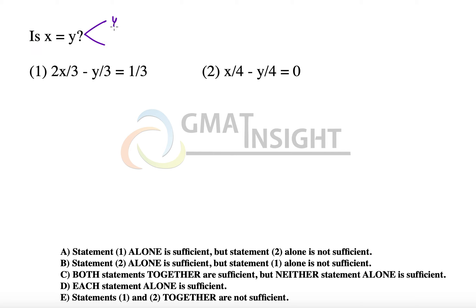Is x equal to y? We need to answer this question in the form of either yes or no. The first statement says that 2x by 3 minus y by 3 equal to 1 by 3.